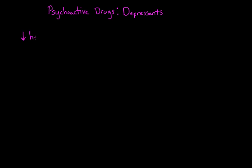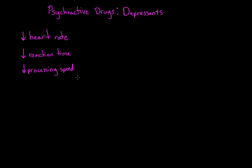Let's start with depressants. Depressants are drugs that lower your body's basic functions and neural activity — for example, your heart rate, reaction time, processing speed, that kind of thing.